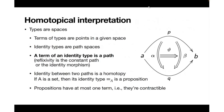The homotopical interpretation says that types can be considered as spaces — informally, terms are points in a given space. Identity types are then path spaces: for two terms A and B there is a path from A to B, denoted P, and another path denoted Q — all terms of the identity type between A and B.